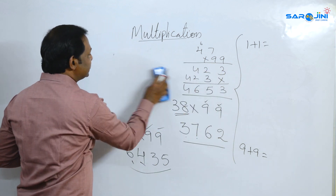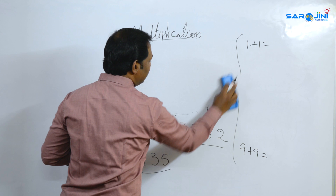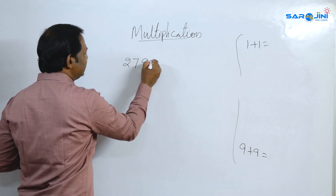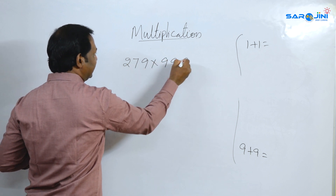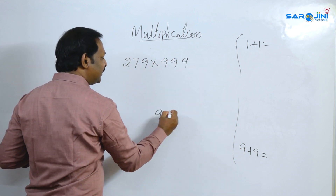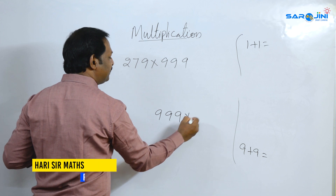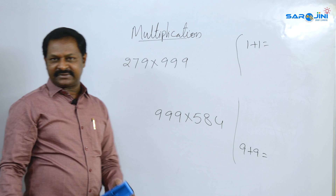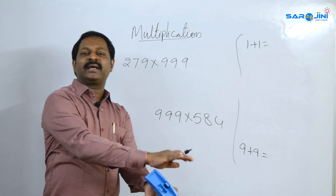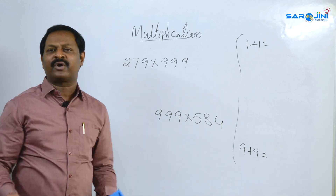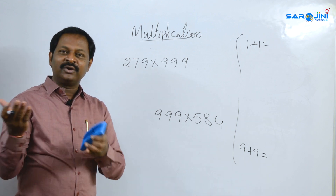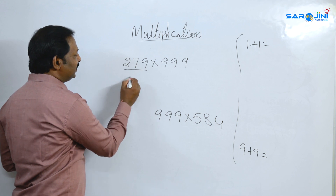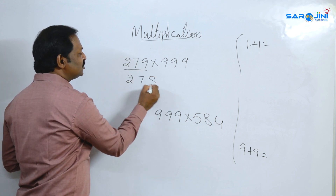Now we have done two-digit. Now we will do three digits: 279 multiplied by 999, and 999 multiplied by 584. Multiplicant and multiplier — 1 times 2 is 2, 2 times 1 is 2. So the number is 279 and one less is 278.